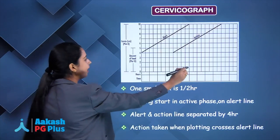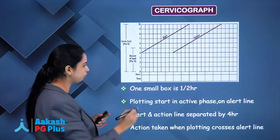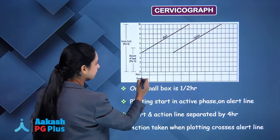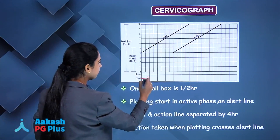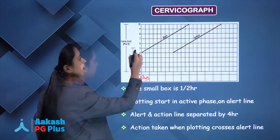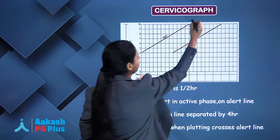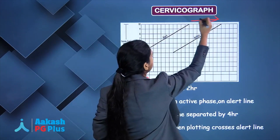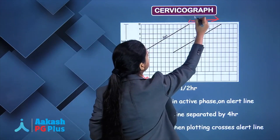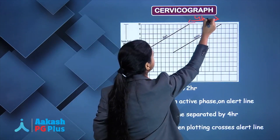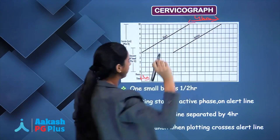Every small box has 30 minutes, so each big box represents 1 hour. The alert line and action line are separated by 4 hours.